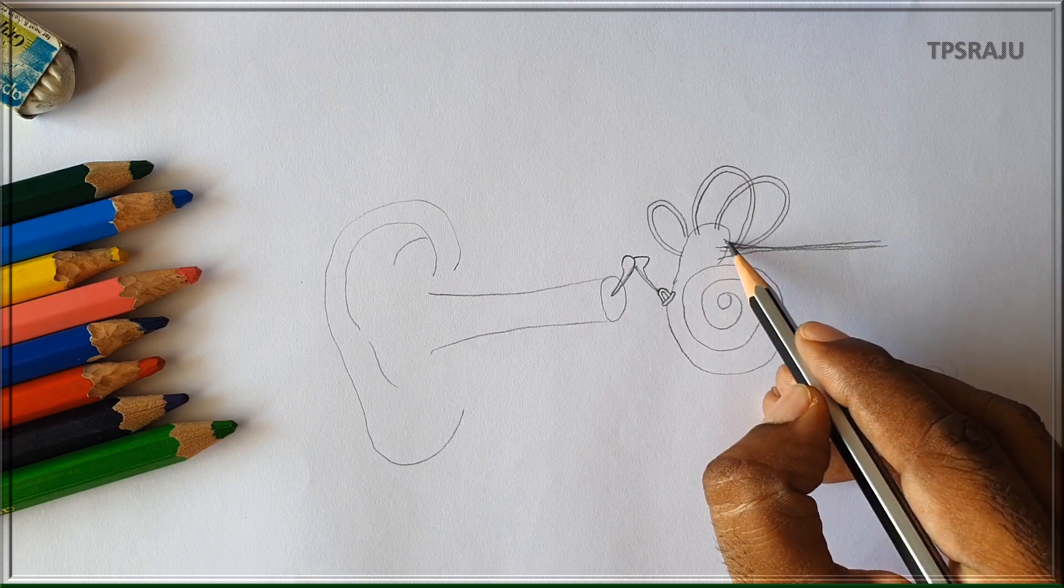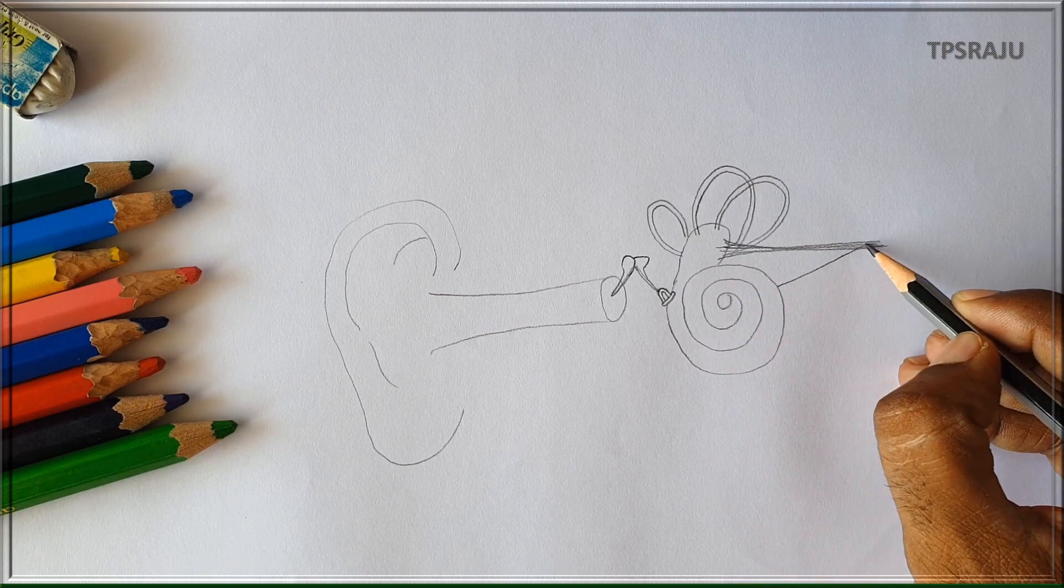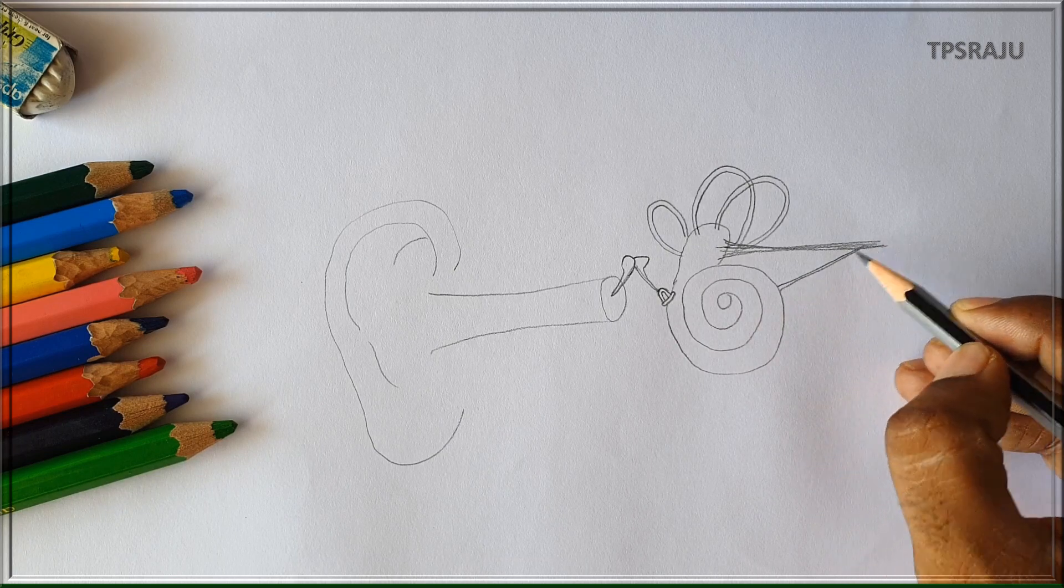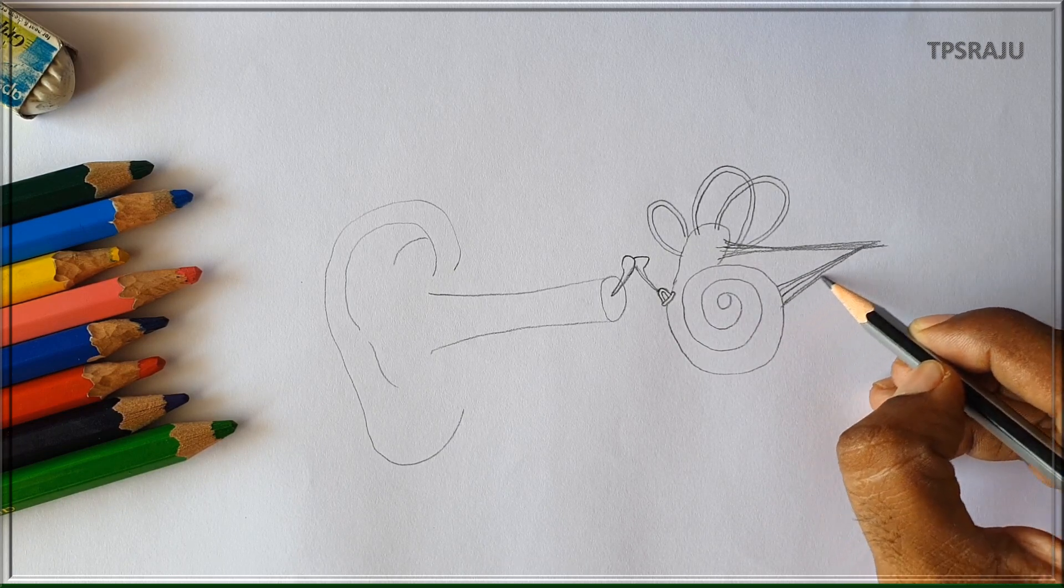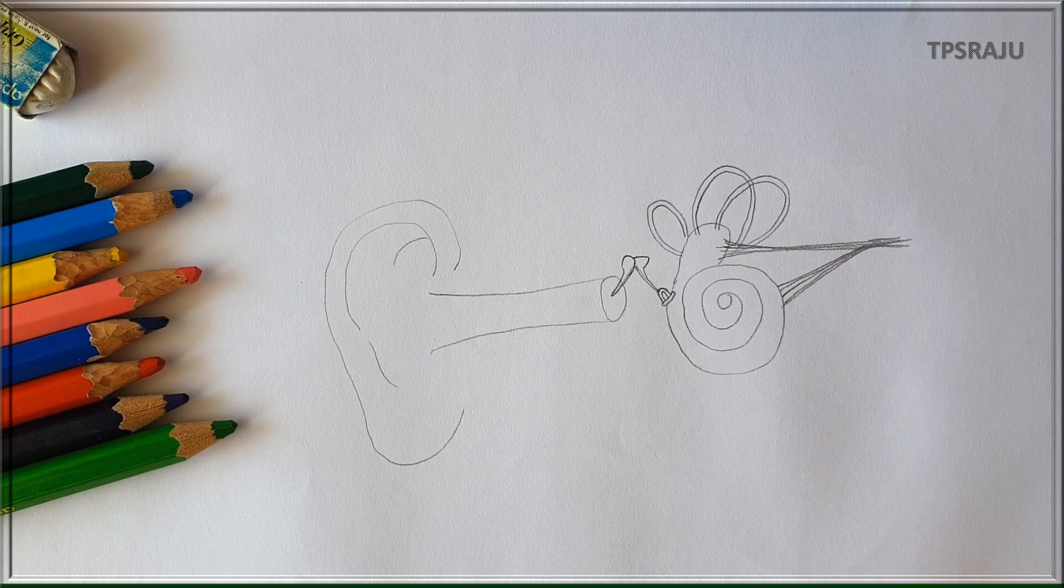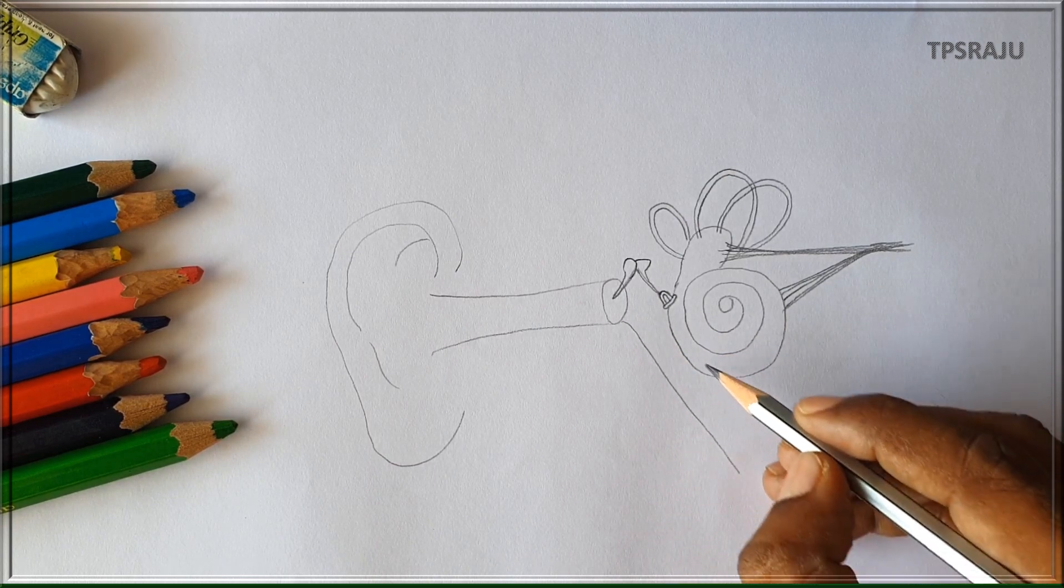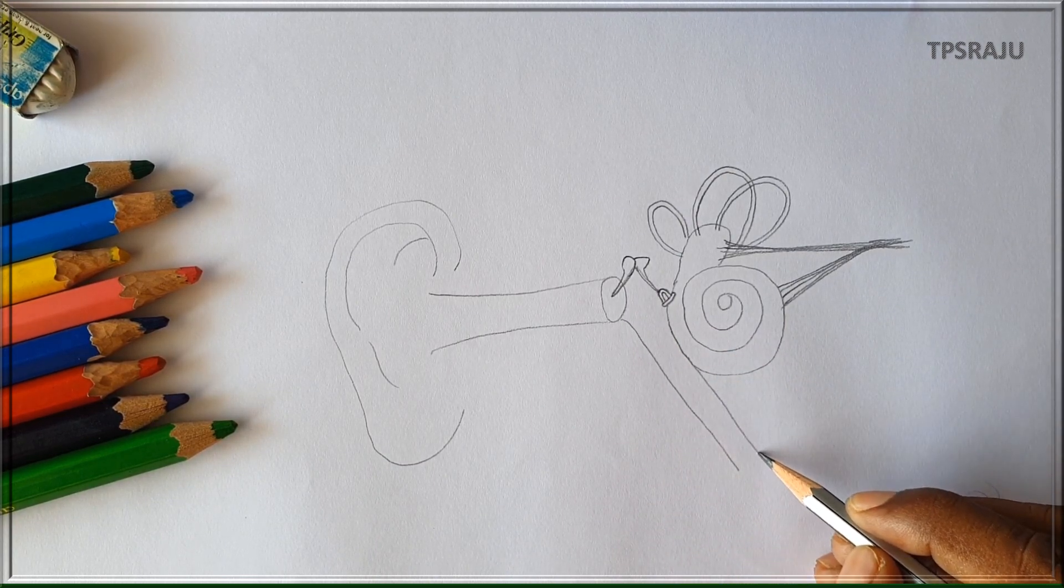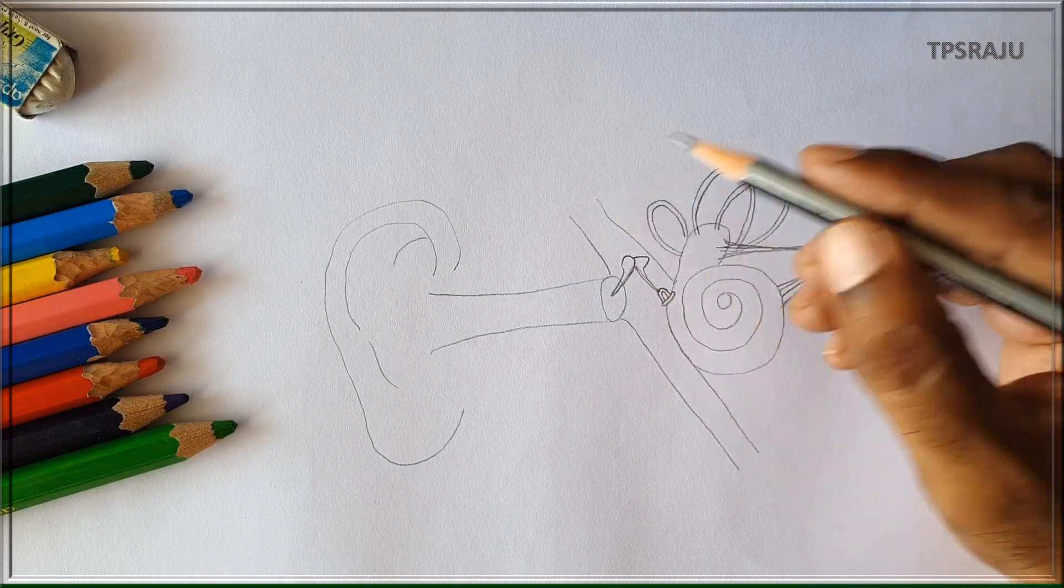Vestibular nerve arises from vestibule. Cochlear nerve rises from cochlea. These two nerves combine to form auditory nerve and reaches the brain. Nearing the eardrum in the middle ear, there is a tube-like structure called eustachian tube.